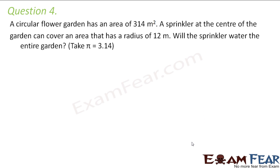Question number 4: A circular flower garden has an area of 314 meter square. A sprinkler at the center of the garden can cover an area that has a radius of 12 meters. Will the sprinkler water the entire garden?